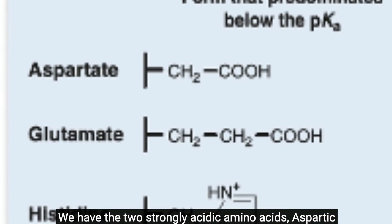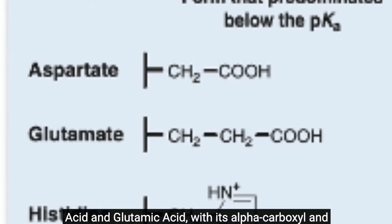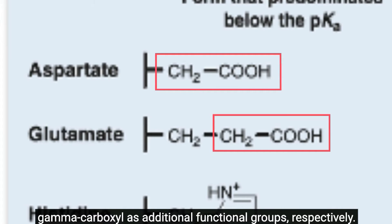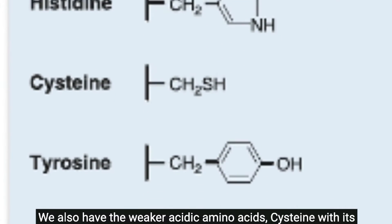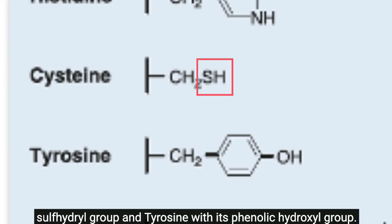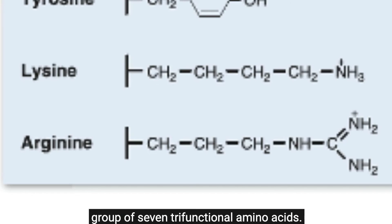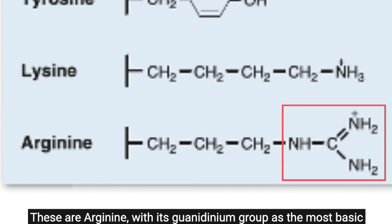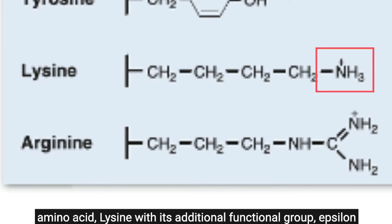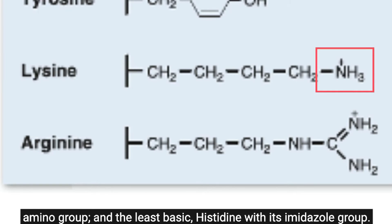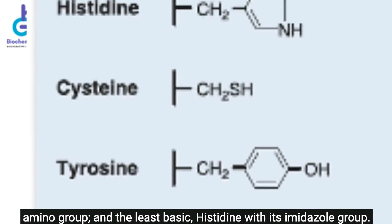The two strongly acidic amino acids are aspartic acid and glutamic acid, with an additional beta-carboxyl and gamma-carboxyl group respectively. The weaker acidic amino acids are cysteine with its sulfhydryl group and tyrosine with its phenolic hydroxyl group. The basic amino acids complete the group of seven trifunctional amino acids: arginine with its guanidinium group as the most basic, lysine with its epsilon-amino group, and histidine as the least basic.